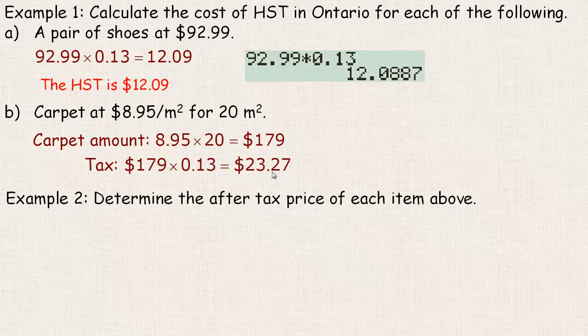You're always rounding to the nearest 5 cents, so if you were paying cash, that would round to 25 cents, because 25 cents is the nearest 5 cents.